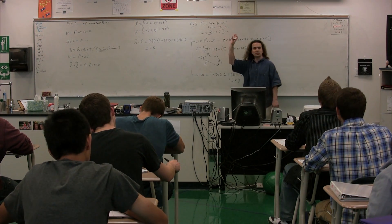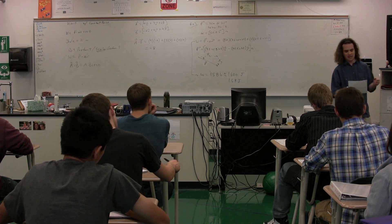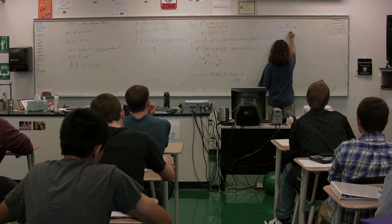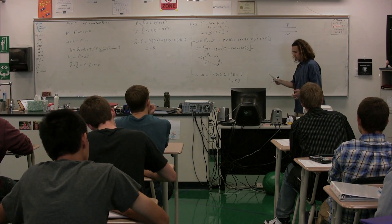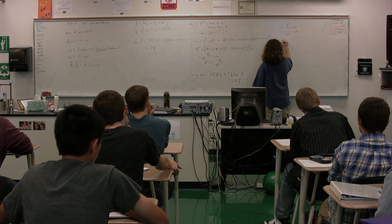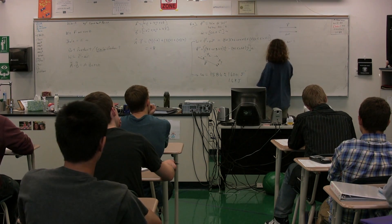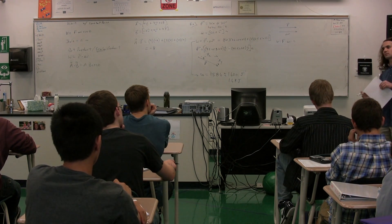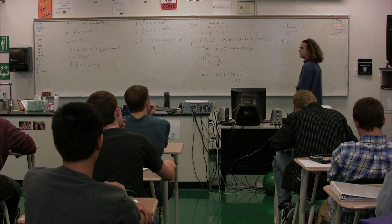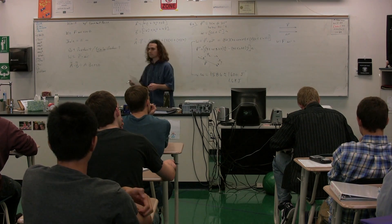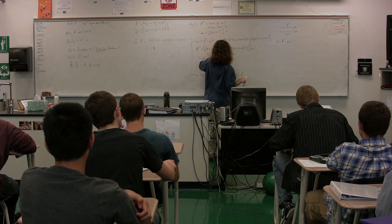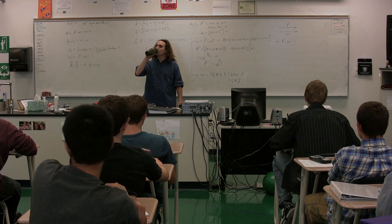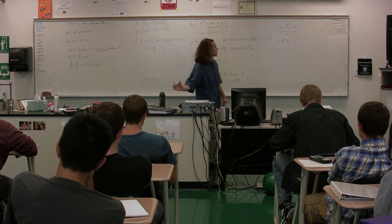Let's take the same force and the same displacement but look at it with different angles. What if the force and the displacement were in the same direction? What would F dot delta R be in that particular case? It's still F times displacement times cosine theta.